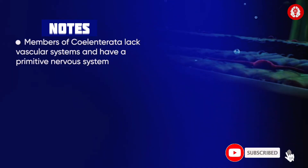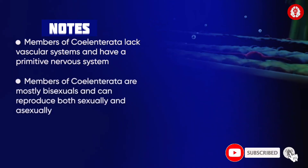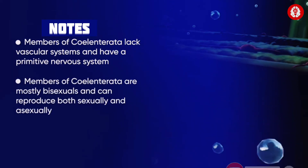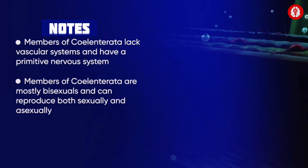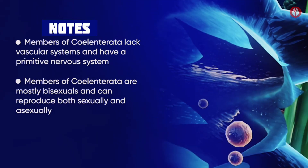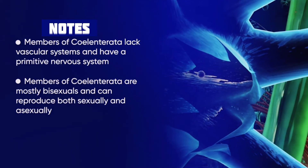They lack vascular systems and have a primitive nervous system. They are mostly bisexual and can reproduce both sexually and asexually.